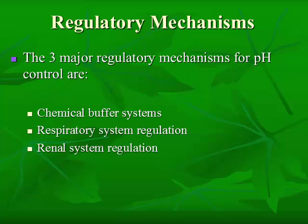You have regulatory mechanisms that are used to help maintain pH control. We're going to talk about each one: the chemical buffer systems, the respiratory system regulation, and the renal system for regulation.